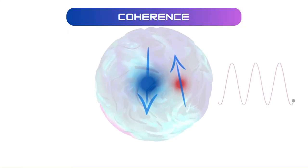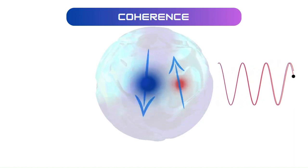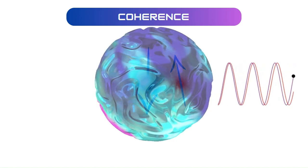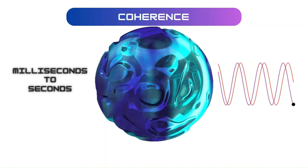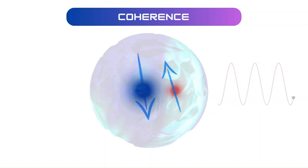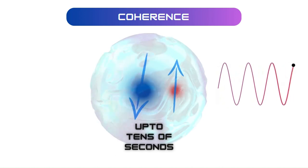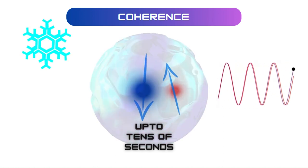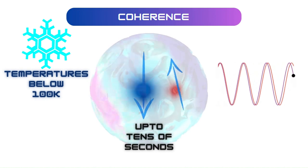Experimental studies have demonstrated that NV center qubits in diamond can exhibit remarkably long coherence times, on the order of milliseconds to seconds at room temperature. Substantially longer coherence times, up to tens of seconds, can be achieved for NV centers by operating them at cryogenic temperatures, typically below 100 Kelvin.